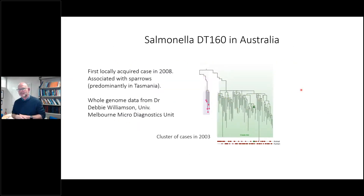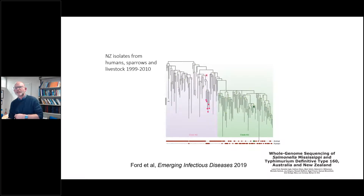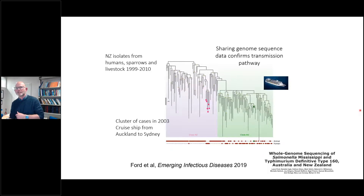As a footnote: a colleague at the University of Melbourne, Debbie Williamson, had sequences from Australia of the same serotype. Most of their sequences fell into a main Australian cluster, but a group sat very differently. When we shared our genome sequences with them, we found this group sat right within the New Zealand cluster — good evidence of transmission between Australia and New Zealand. It turned out this was a group of people who travelled on a cruise ship from Auckland to Sydney and were originally infected in New Zealand.